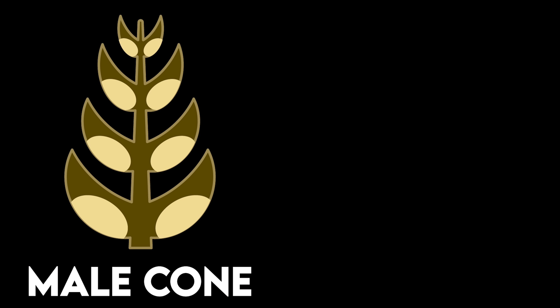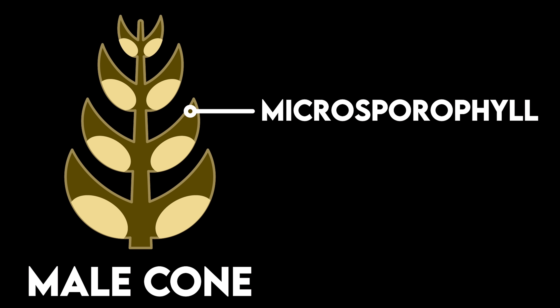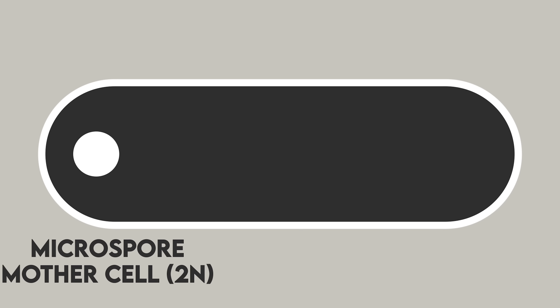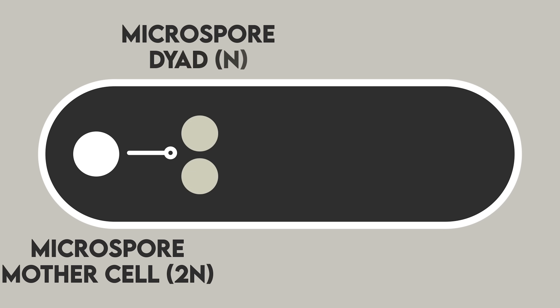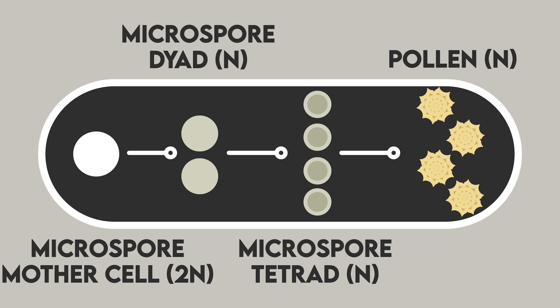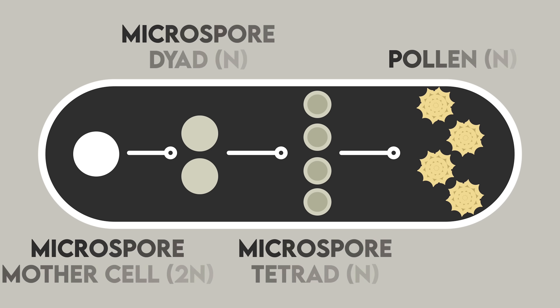The male cones are made up of microsporophylls, which contain the site of formation of male spores called microsporangium. Inside the microsporangium, several diploid cells called microspore mother cells are present, which divide by meiosis resulting in the formation of haploid male spores, or microspores. Each of these microspores later develops into a pollen grain.